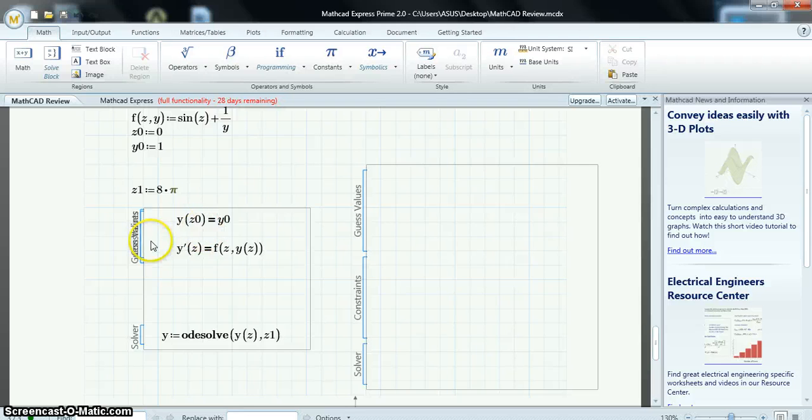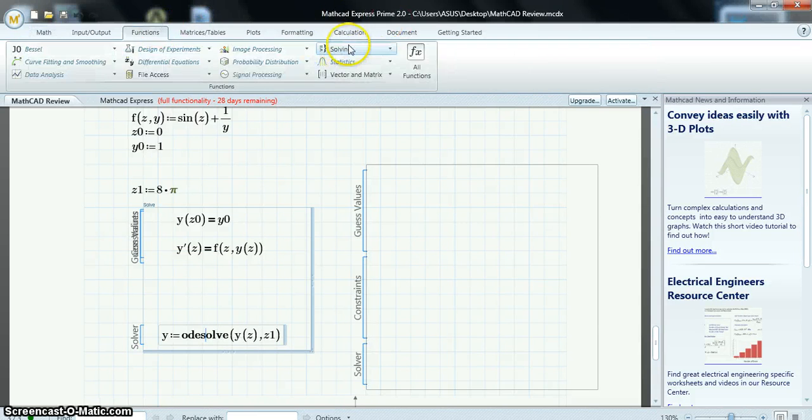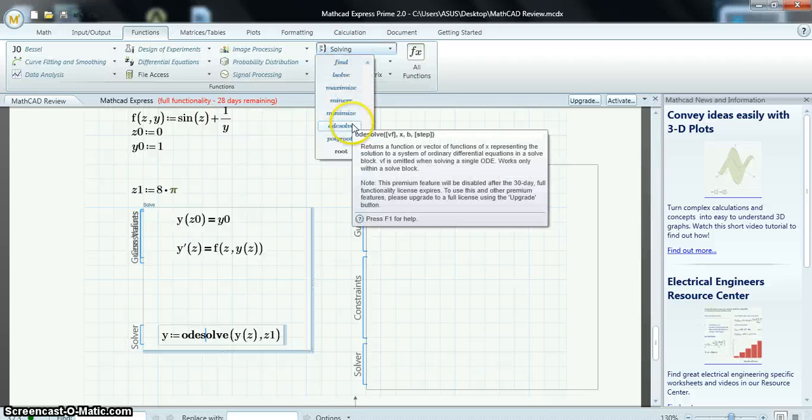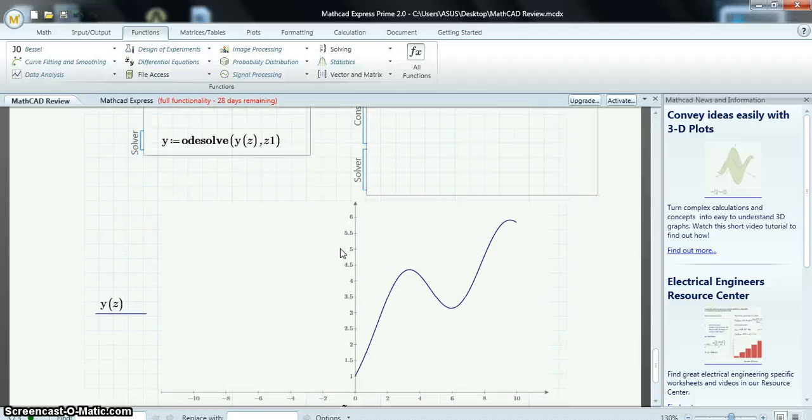And, you will, for some reason the labels here are overlapping. I don't know why that is. I have boundary conditions, constraints. And, I use the ODE solve function in the solver section. You get that by going to Functions, Solving, and ODE solve. And, then you can plot your solution using the plots that I just went over.